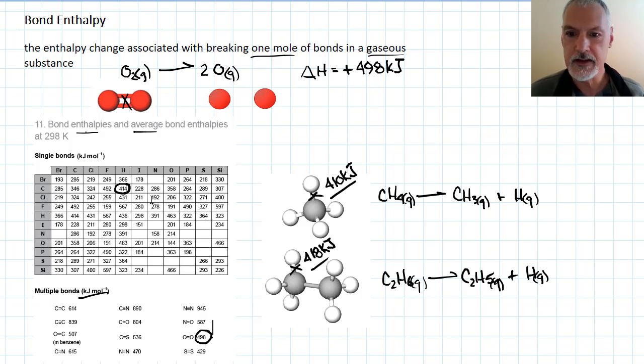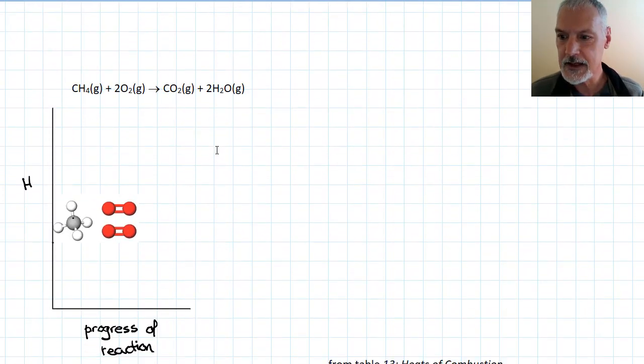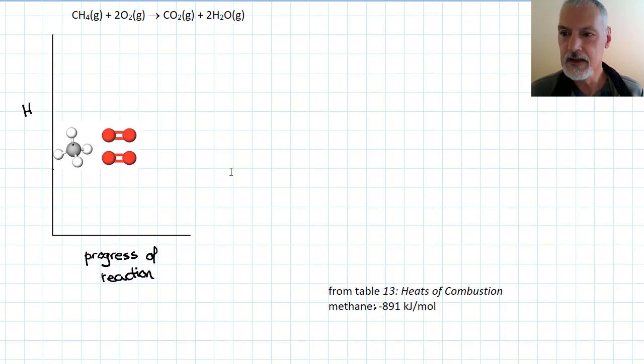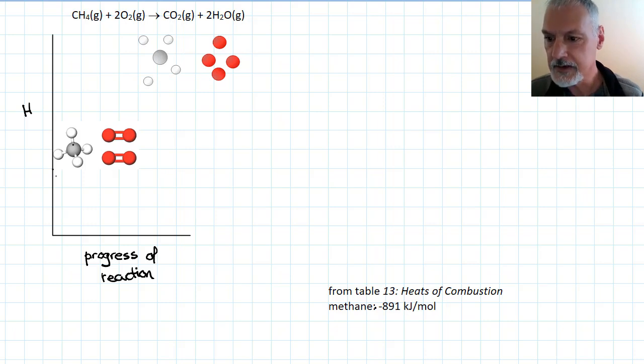Let's look at how we can use bond enthalpies to predict the enthalpy change of a reaction. So I would like to determine the enthalpy change associated with burning methane. Here I begin with my two starting molecules. Always a good idea to have a sketch of your molecules so you know what bonds are being broken. And the idea is I'm going to take these and disassemble them into individual gaseous atoms. So I'm going to take my substances, disassemble them, and turn them into individual atoms.